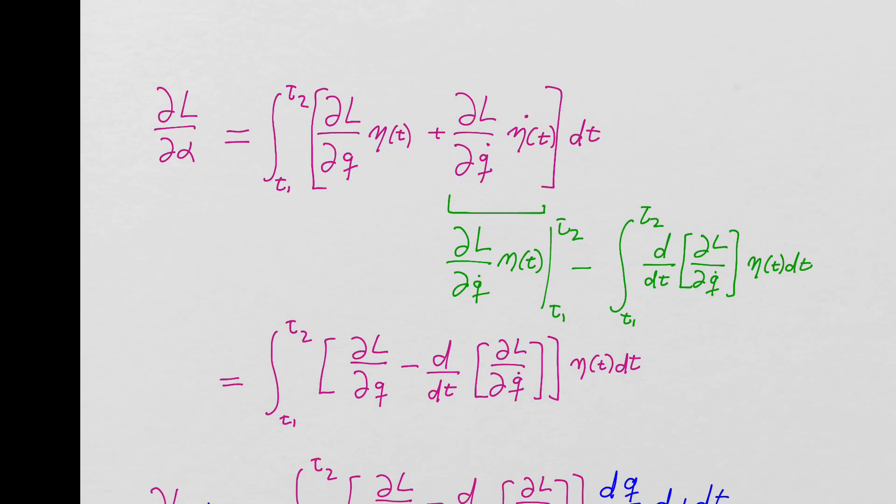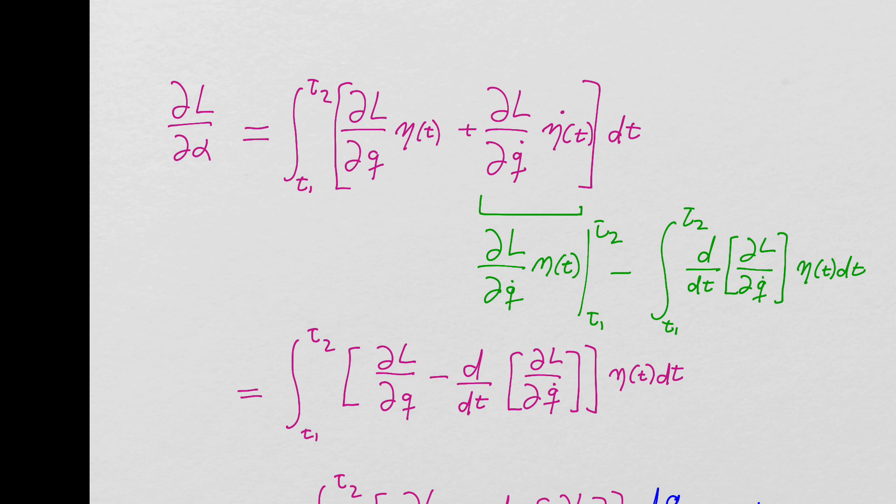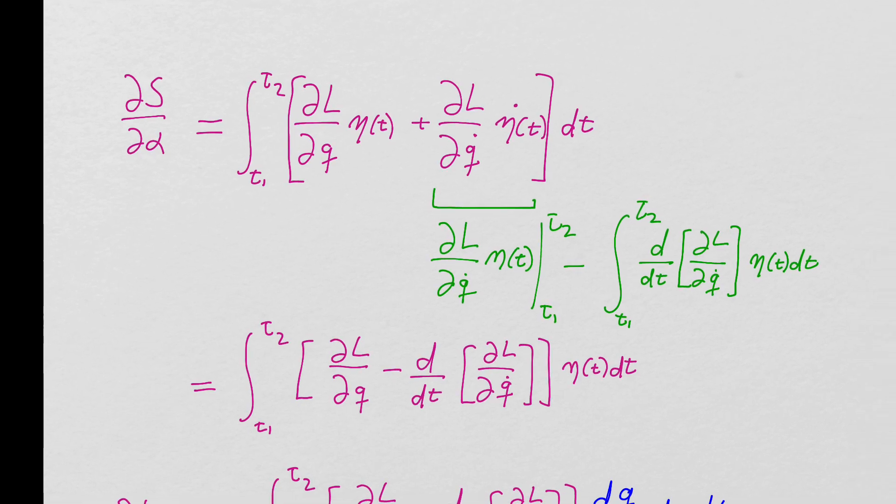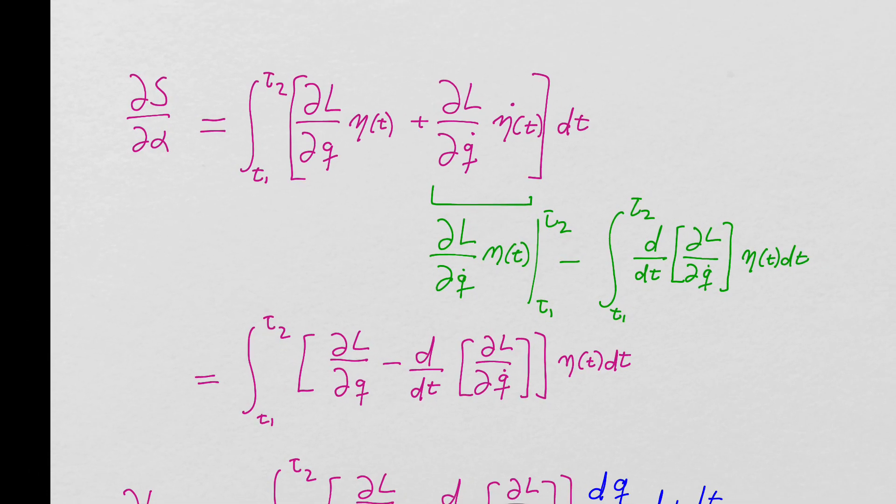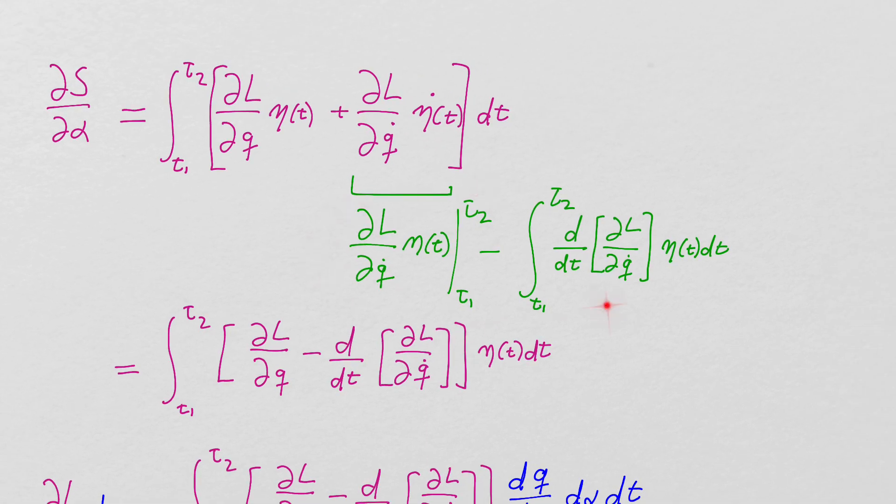Okay, so the next step is that integration by parts step. It's really the same. I mean this analysis is really the same. The integration by parts is designed to get rid of eta dot. And so I've reproduced that integration by parts here, but you've got the same story. You end up with a boundary term that's zero because eta of t1 and eta of t2 are both zero.